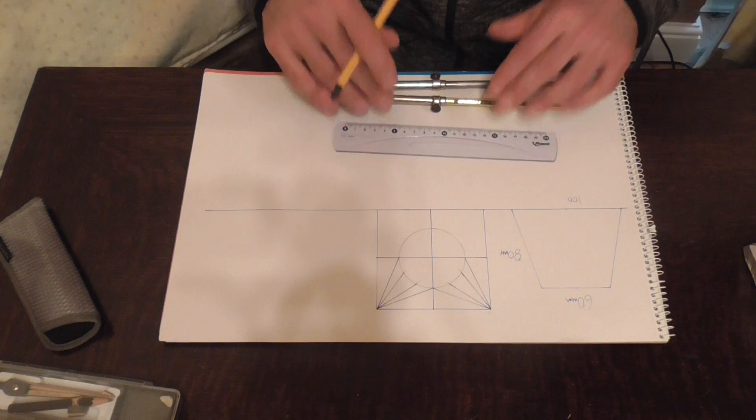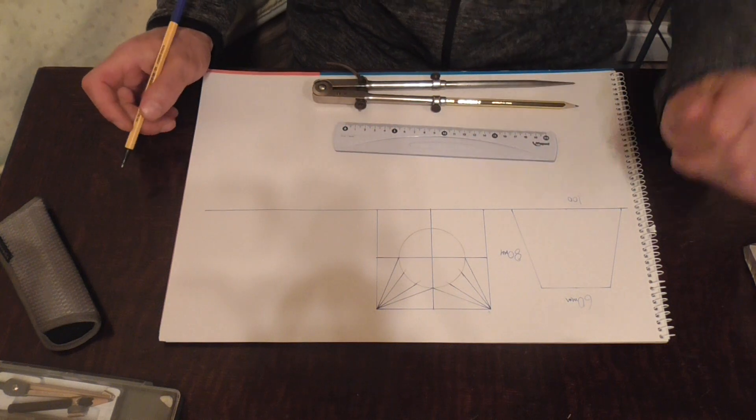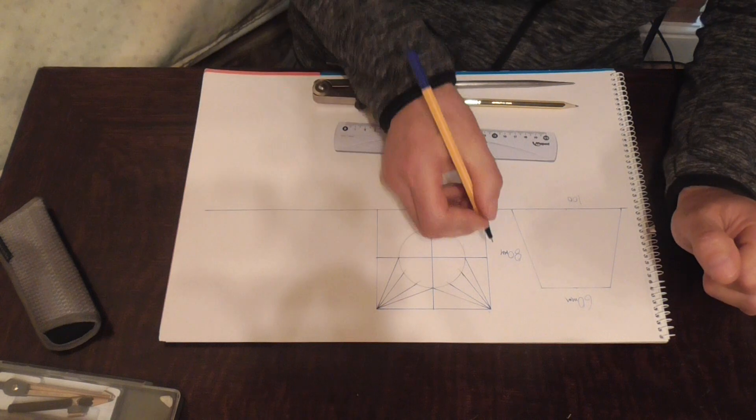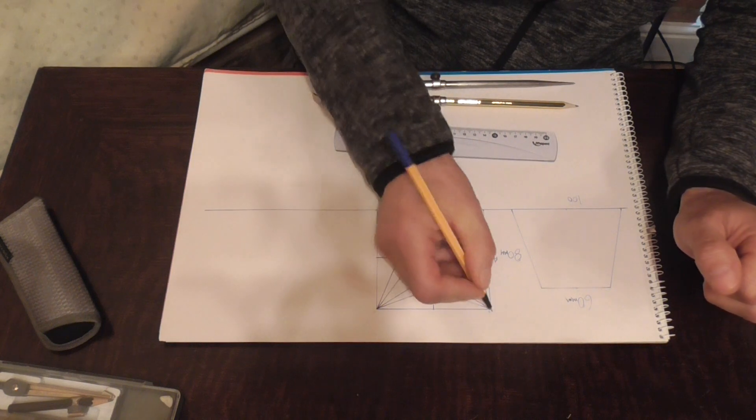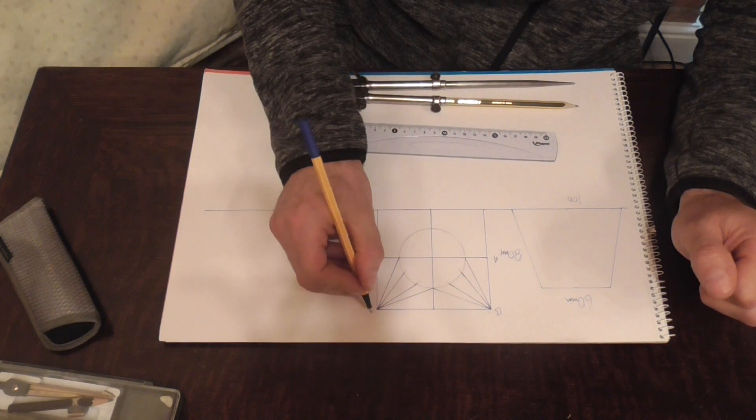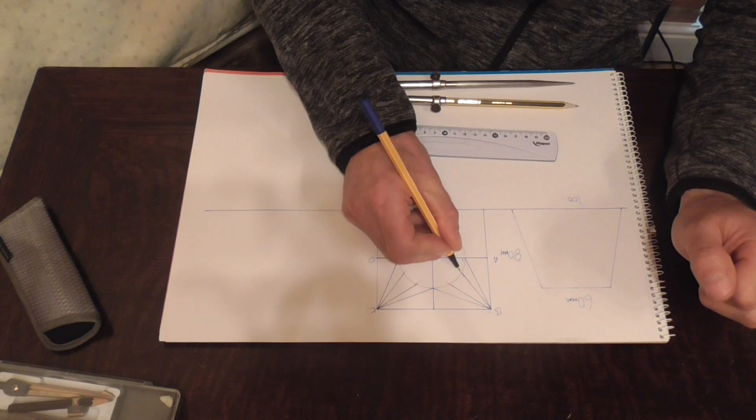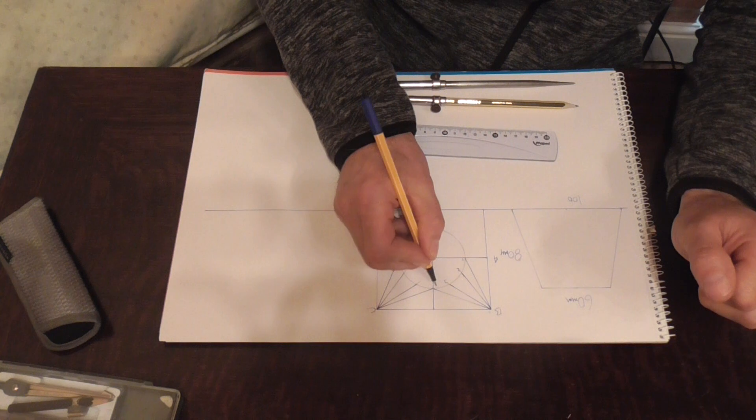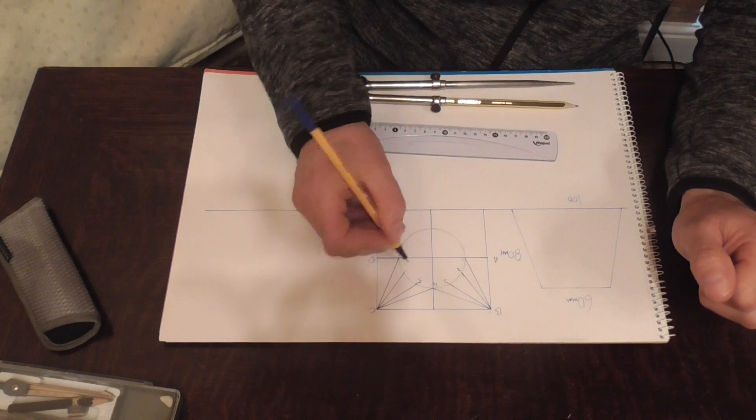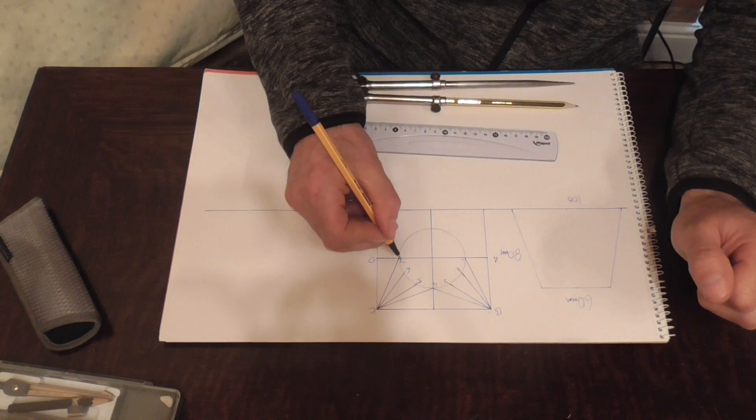So there's our half plan view. So all we have to do now is label that. We're going to go A, B, C and D. And number it 1, 2, 3, 4, 5, 6 and 7.